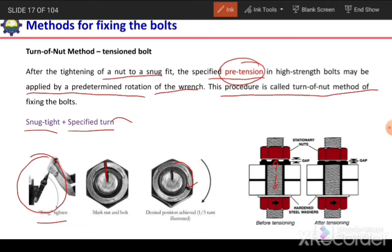This can also be indicated by using washers with gaps. In case of snug tight, there will be a gap. These impressions will not be flattened and there will be a gap between the nut and the plate.